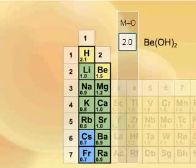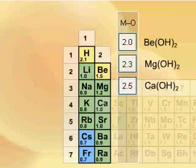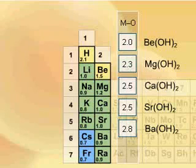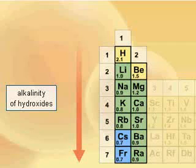Beryllium hydroxide has amphoteric properties and magnesium hydroxide is a medium strength base. But beginning with calcium hydroxide and moving down the group, the hydroxides of successive metals have a similar basic strength to alkali metal hydroxides. The alkalinity of the hydroxides increases down the group as the electronegativity of the metals decreases.